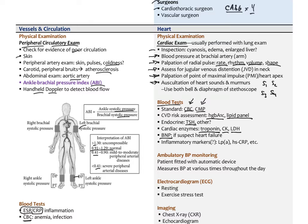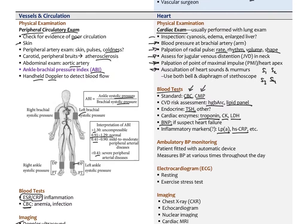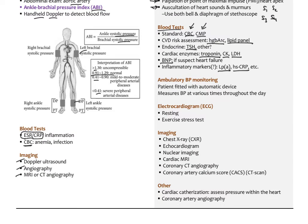Different inflammatory markers are sometimes measured, such as LP little a and high-sensitivity CRP. In addition to monitoring blood pressure in the office, ambulatory blood pressure monitoring fits the patient with an automatic device measuring blood pressure throughout the day — data shows this is more accurate than office or home readings. We can also use the electrocardiogram at rest or while the patient is on a treadmill, called an exercise stress test, to see how the heart's electrical rhythm functions under demand.